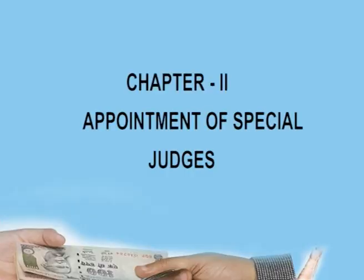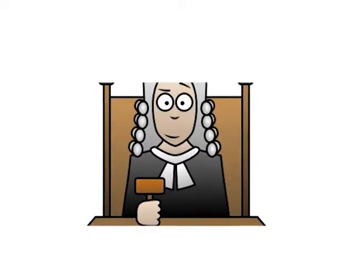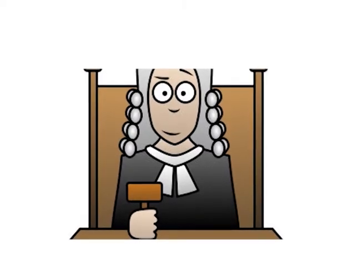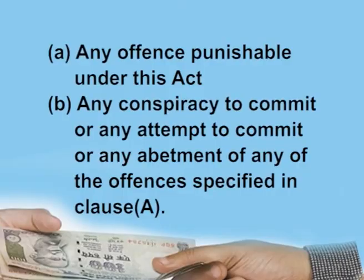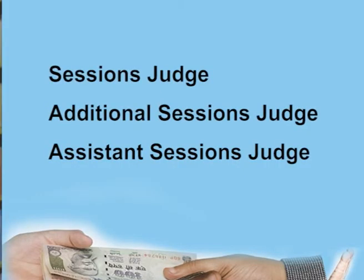Now, let us move on to Chapter 2, which deals with the appointment of special judges. Section 3 — Power to Appoint Special Judges: the central government or the state government may, by notification in the official gazette, appoint as many special judges as may be necessary for each area or areas or for such case or group of cases as may be specified in the notification, to try any offense punishable under this act, any conspiracy to commit, or any attempt to commit, or any abatement of any of those offences. Subsection 2 says a person shall not be qualified for appointment as a special judge unless he is or has been a sessions judge, an additional sessions judge, or an assistant sessions judge under the Code of Criminal Procedure 1973.